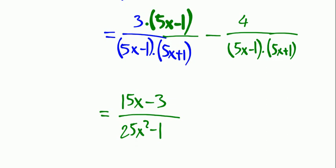Now I can write the denominator as 25x squared minus 1, because we have the same denominator. No need to write it in factored form.